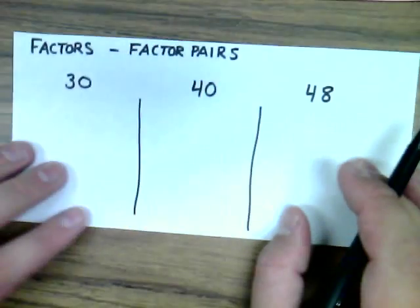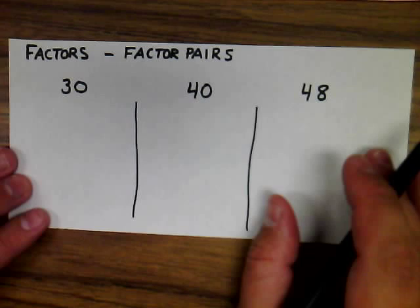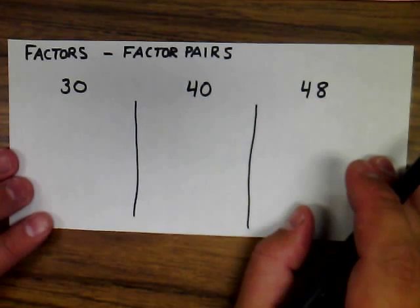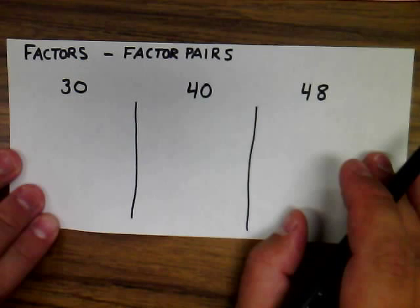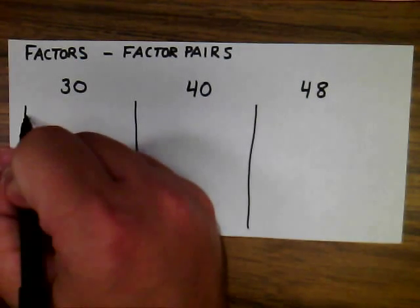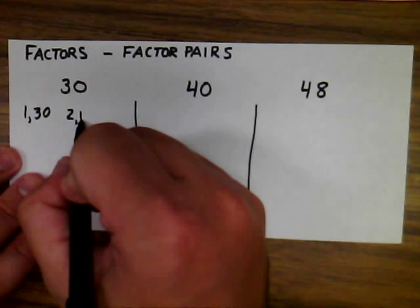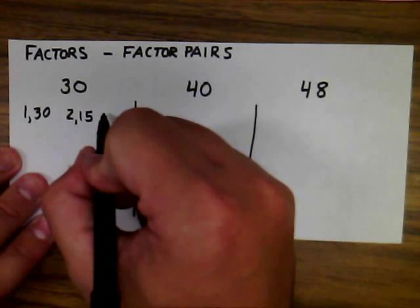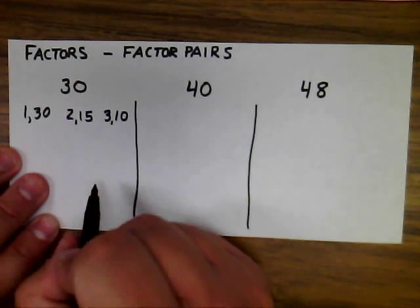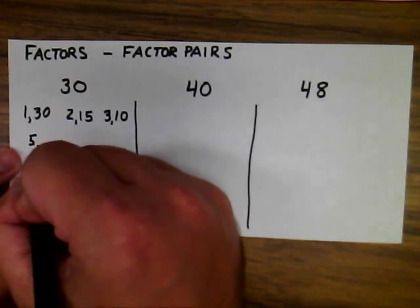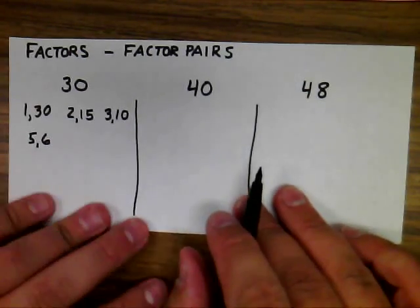Some additional examples of factor pairs can be done with these three examples. I'm basically going to do the same thing the rainbow method had me doing, but I'm going to just list the factors in pairs right from the beginning. For 30: 1 and 30, 2 times 15 because it's even, 3 times 10, 4 does not go into 30, and 5 times 6. Now I've reached the middle, and those are all the factor pairs of 30.